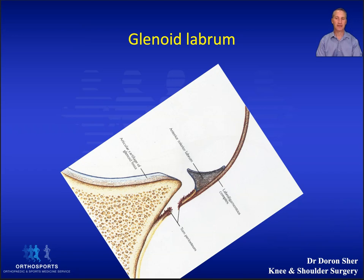It seals the interface between the glenoid and the humeral head and creates negative intra-articular pressure — that suction effect — which is why your shoulders don't dislocate when you die. Tearing of the labrum from the glenoid is commonly known as a Bankart lesion. A Bankart lesion causes a notable decrease in labral height and a pronounced reduction of glenohumeral stability.